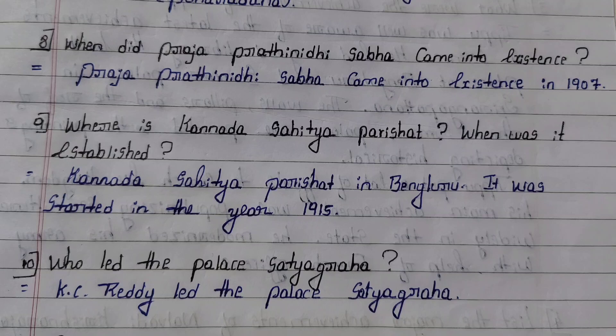Ninth question: Where is Kannada Sahitya Parishat? When was it established? Answer: Kannada Sahitya Parishat is in Bangalore. It was started in the year 1915. Tenth question: Who led the Palace Satyagraha? Answer: K.C. Reddy led the Palace Satyagraha.